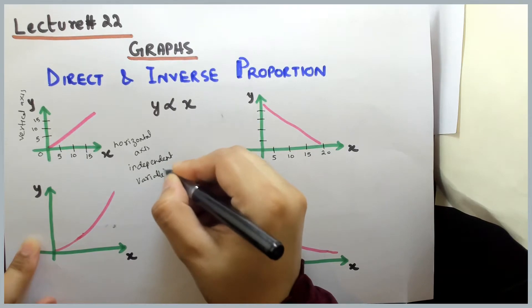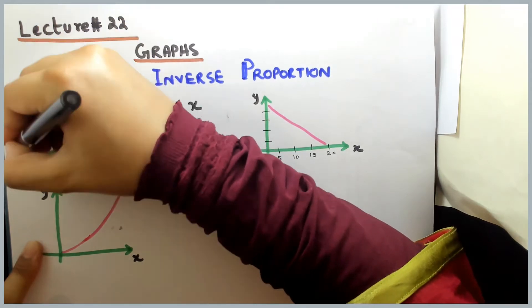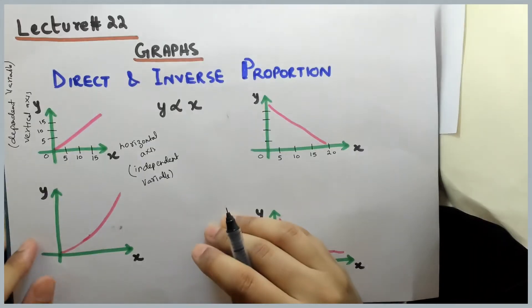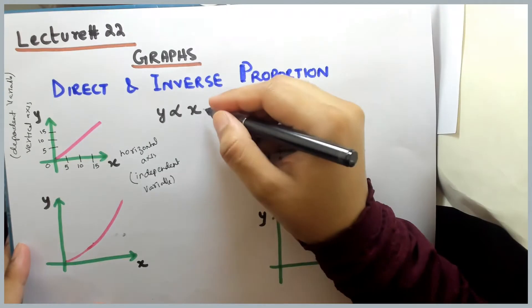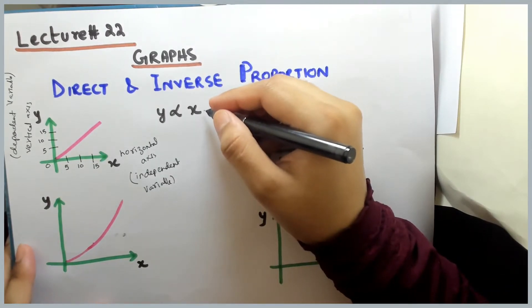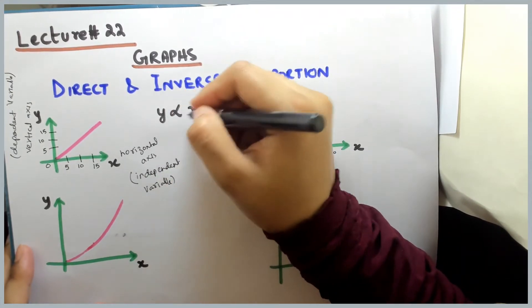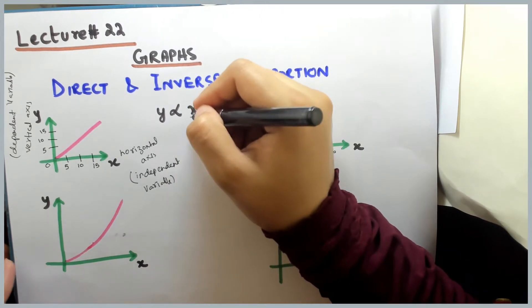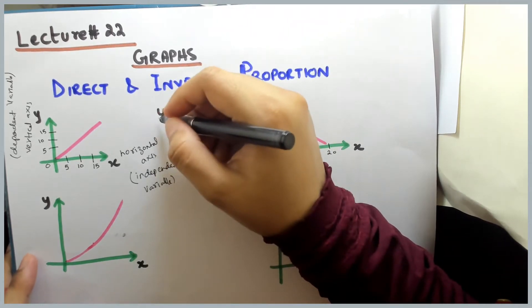And in the vertical axis, you always have dependent variable. Always on your right side you have independent variable and on your left side you always have a dependent variable.